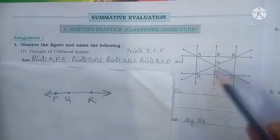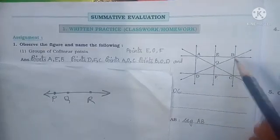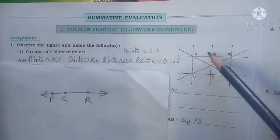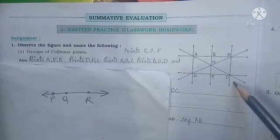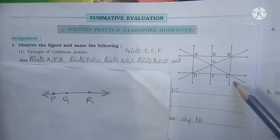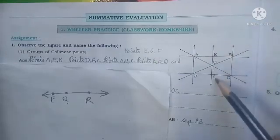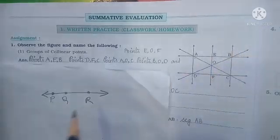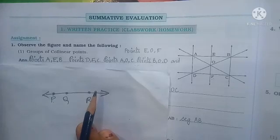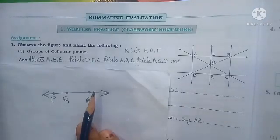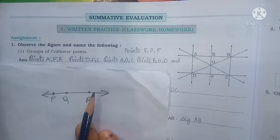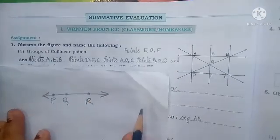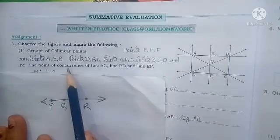Point D, O, B are also lying on the same line, so they are also collinear points. Again, point A, O, C are lying on the same line, so they are also collinear. And E, O, F are also lying on the same line, so they are also collinear points. So to revise: points which are lying on the same line, two or more, are your collinear points.